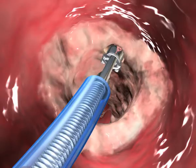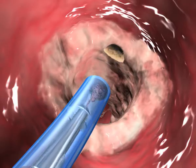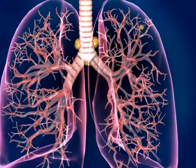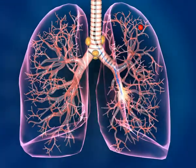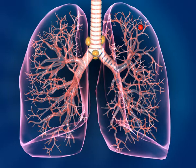Through this channel, endobronchial tools are inserted for collection of tissue samples. The iNReach system provides a minimally invasive tool for accessing peripheral lung lesions and mediastinal lymph nodes. Timely diagnostic and treatment decisions of lung disease are possible even in patients with procedure-restricting conditions.